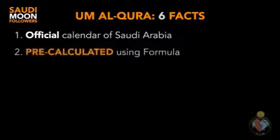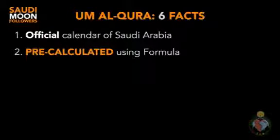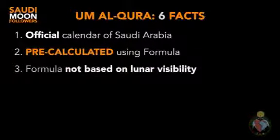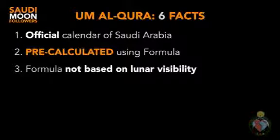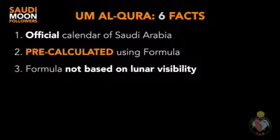The Umm al-Qurah calendar is calculated based on a formula. This means that the calendar can be printed many years in advance, which is helpful for Saudi Arabia for planning and administration purposes. Importantly, this formula used by the Umm al-Qurah calendar is not based on the visibility of the moon in Saudi Arabia.